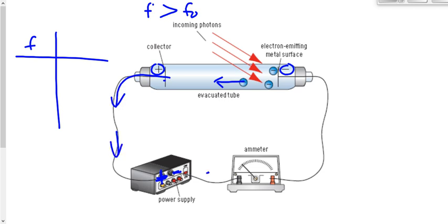We end up getting a complete circuit here, flowing around. Because we get electrons flowing around, we have a reading on the ammeter. There's a certain current there — we're measuring that current.